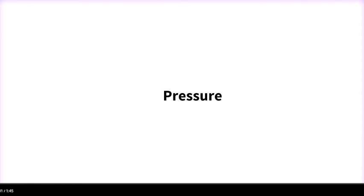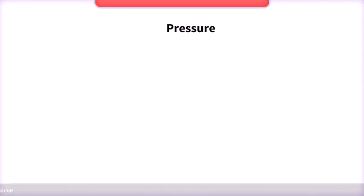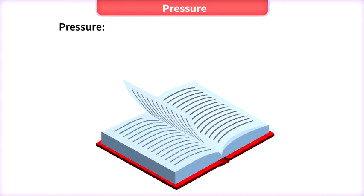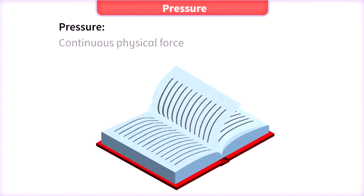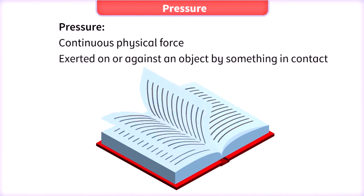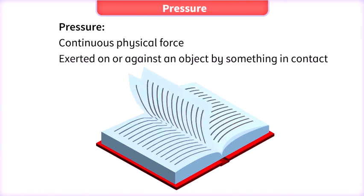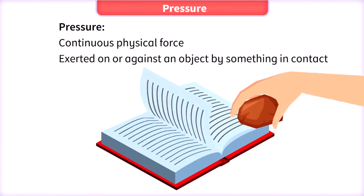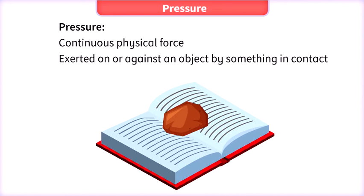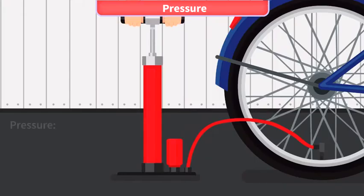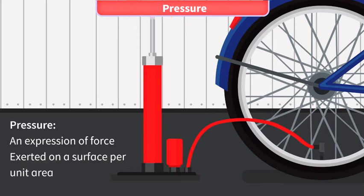Let us learn about pressure. Pressure is defined as the continuous physical force exerted on or against an object by something in contact with it. Pressure is an expression of force exerted on a surface per unit area.